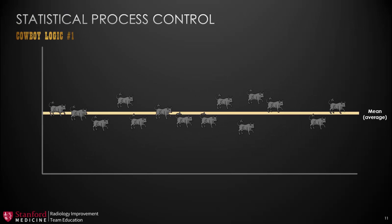We've got a graph here. The cattle are going along a certain destination, and their mean or average is shown on the graph. If this were a run chart, here is our mean, and the cattle represent all the data points falling above and below that mean. Like cowboy logic number one stated, we set boundaries — in statistical process control, we call those control limits. You can calculate those using statistics. If you want to set control limits around your run chart, go ahead and contact your local QIA person and they can help you do that.